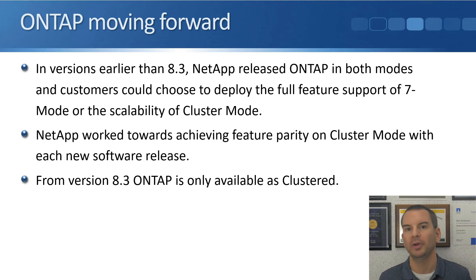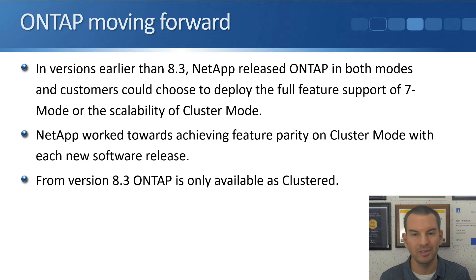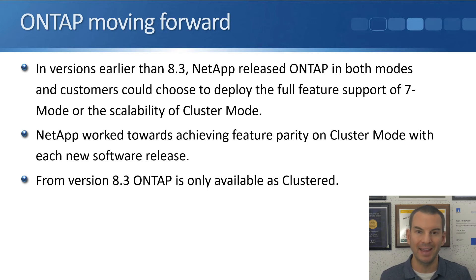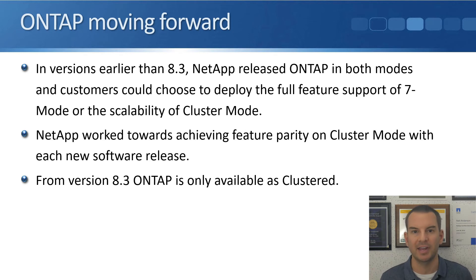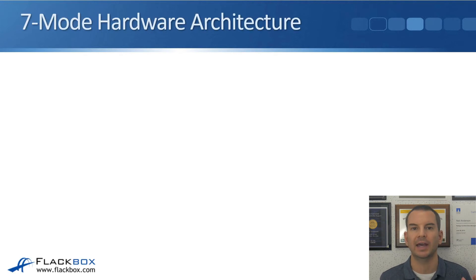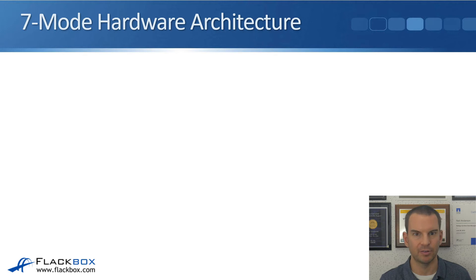NetApp worked towards having one operating system providing the best of both worlds, achieving feature parity for Cluster Mode in each new software release. From version 8.3 of ONTAP, they achieved that. Now there is just one version — Clustered Data ONTAP — which has both the scalability and the full feature set. Because there is only one version now, they've simplified the naming and it's simply known as ONTAP. Let's have a look at the 7-MODE architecture to understand its scalability limitations.